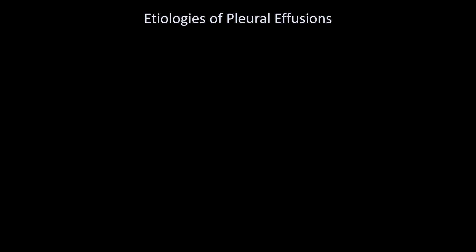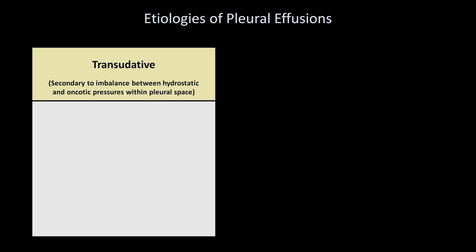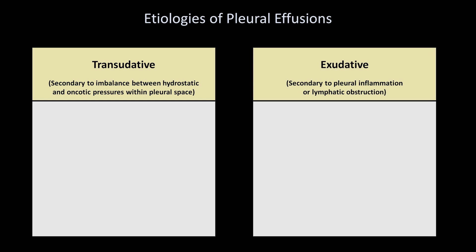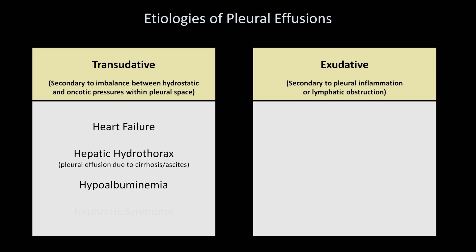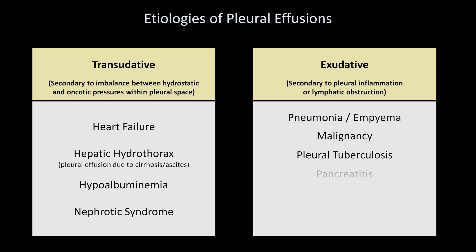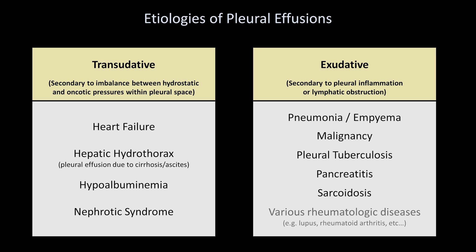There are many etiologies of pleural effusions. The vast majority cannot be distinguished from one another based on x-ray appearance, so I'll mention just the most common. Pleural effusions are almost always subdivided into transudative effusions, which are those secondary to an imbalance between hydrostatic and oncotic pressures within the pleural space, and exudative effusions, which are those secondary to pleural inflammation or lymphatic obstruction. Transudative effusions can be caused by heart failure, hepatic hydrothorax, hypoalbuminemia, and nephrotic syndrome. Exudative effusions can be caused by pneumonia or empyema, malignancy, pleural tuberculosis, pancreatitis, sarcoidosis, and various rheumatologic diseases.